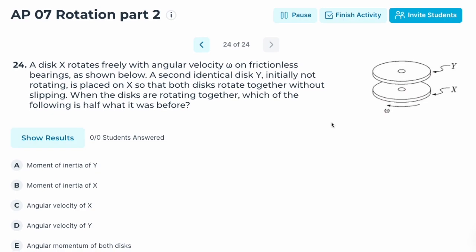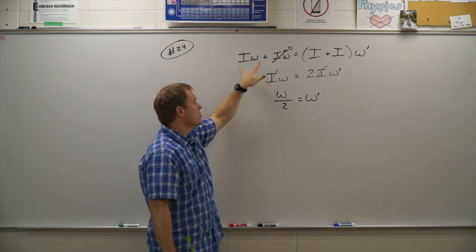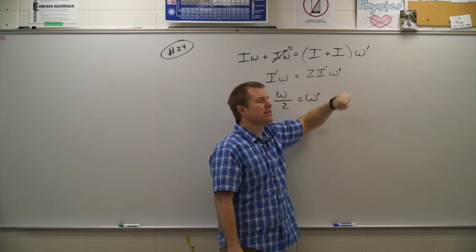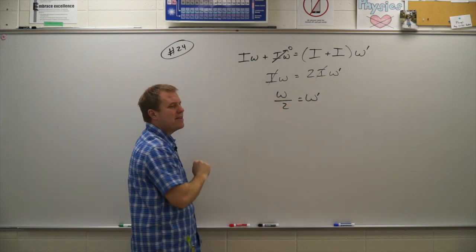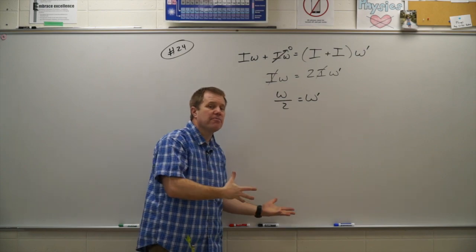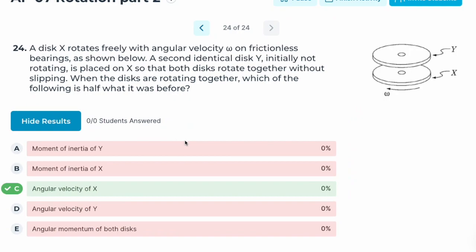Number twenty-four: disk X rotates freely with angular velocity ω. A second identical disk Y, initially not rotating, is placed on X so they rotate together without slipping. Which quantity is half of what it was before? With no net external torque, angular momentum is conserved: Iω = 2I·ω'. Solving gives ω' = ω/2. The final angular velocity is half the initial angular velocity. Correct answer: C — the angular velocity decreases by half.